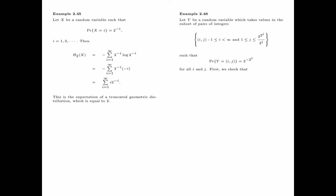First, we check that this is a proper probability distribution. To do this, we sum the probability y equals (i, j) for all i and all j. The probability that y equals (i, j) is 2 to the power minus 2 to the power i, and the number of terms in the summation over j is 2 to the power 2 to the power i, divided by 2 to the power i. The 2 to the power minus 2 to the power i cancels with 2 to the power 2 to the power i, and what we are left with is summation i from 1 to infinity of 1 over 2 to the power i, which equals 1.